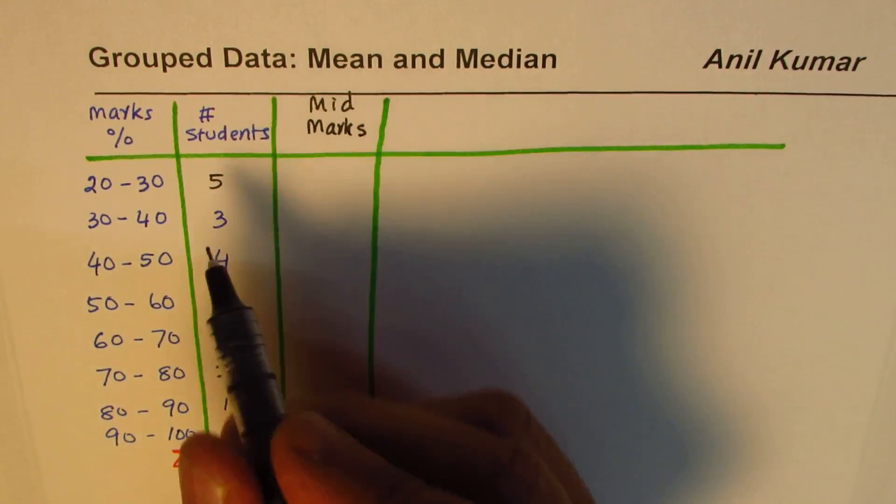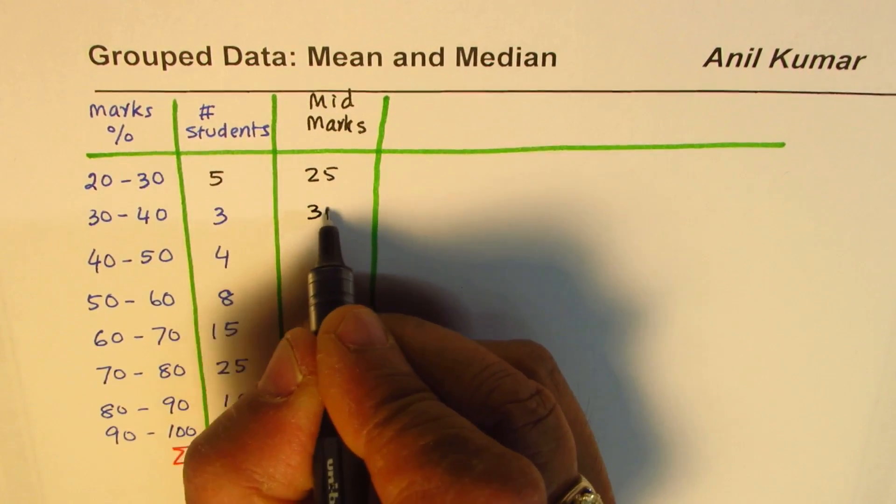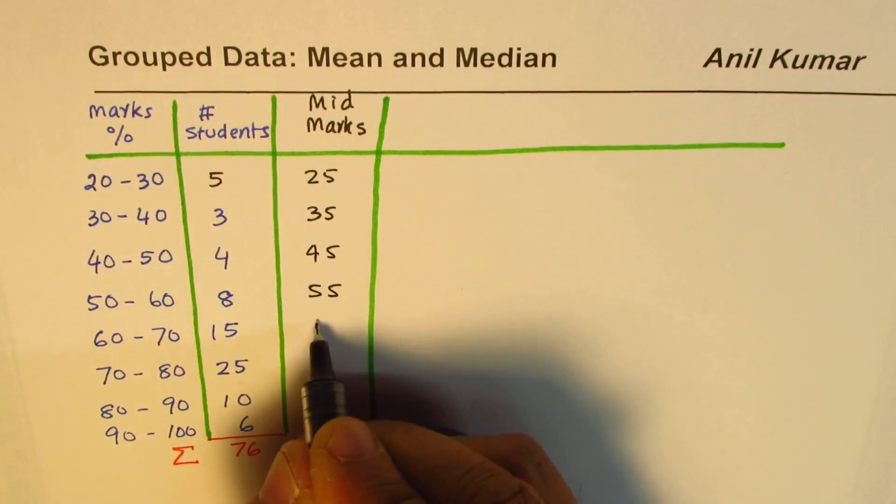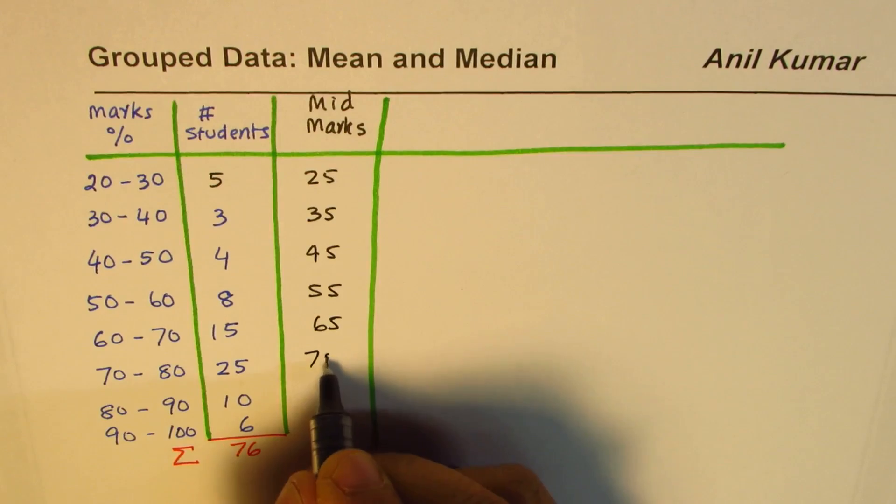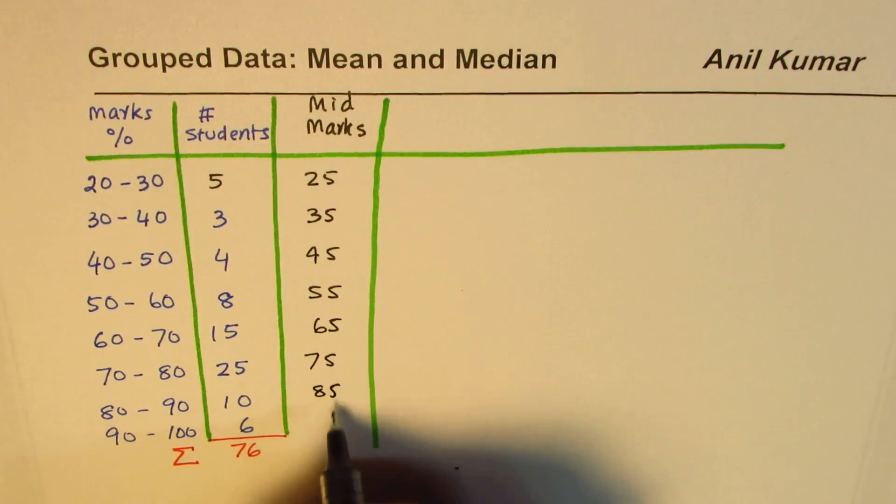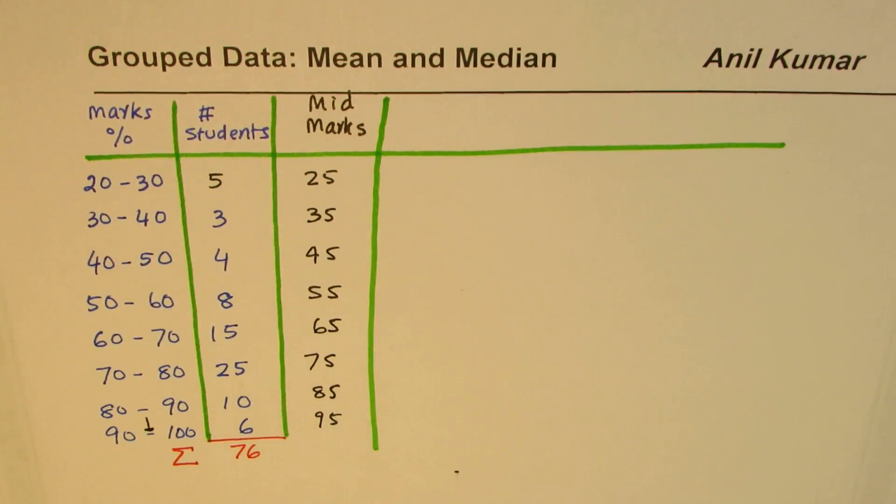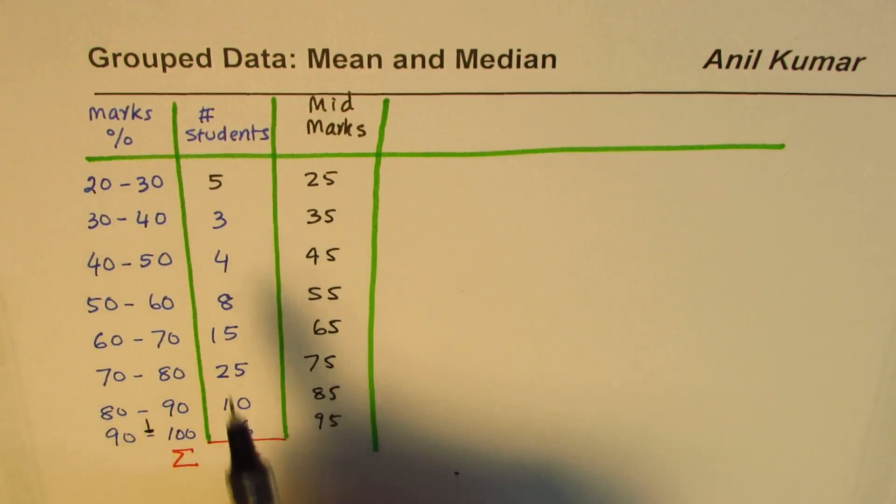The mid marks here will be 20 plus 30 divided by 2 which is 25. The mid marks in sequence will be 25, 35, 45, 55, 65, 75, 85, and 95.